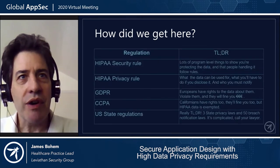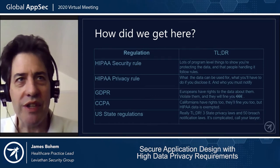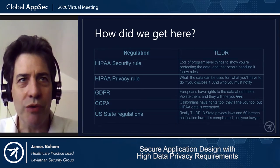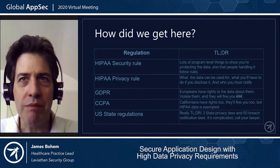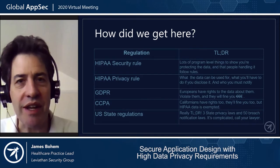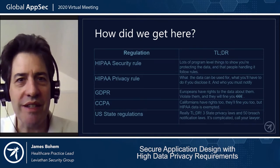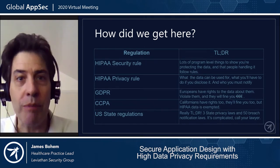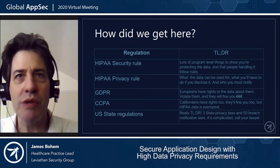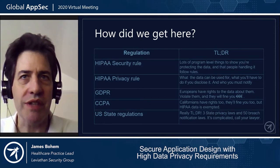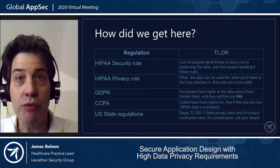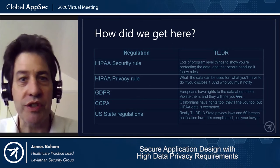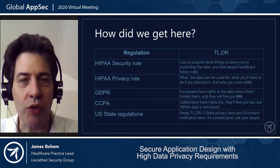There are a number of regulations, all exceedingly complex. The HIPAA security rule talks mostly about protecting the data — not just in code and systems, but mostly in human actions. It's a lot about rules for the people handling the data and, to a lesser extent, about technical controls. The privacy rule talks about what the data is allowed to be used for, which influences the controls around who's allowed to see it and what they're allowed to do with it.